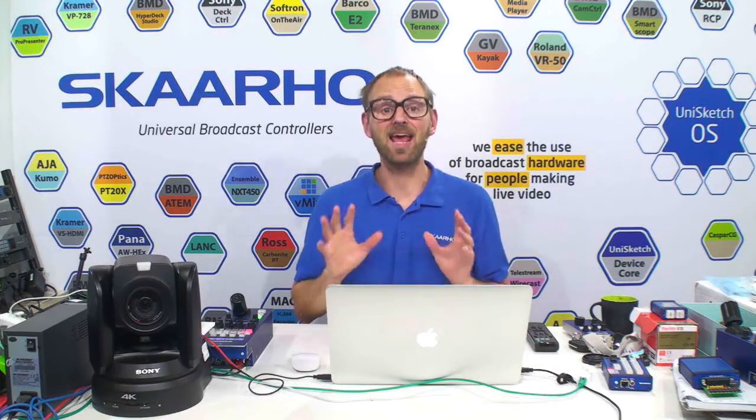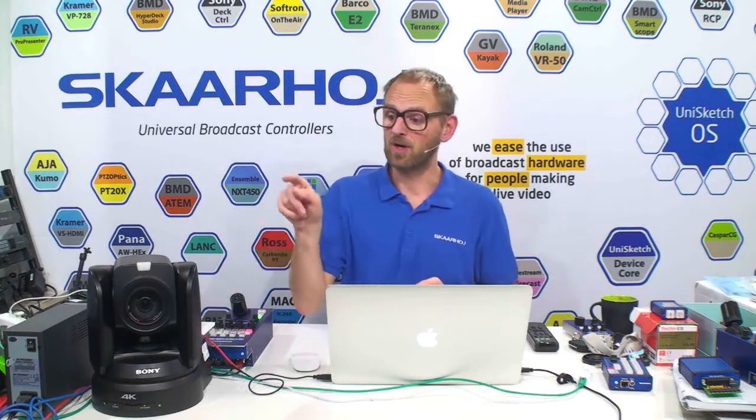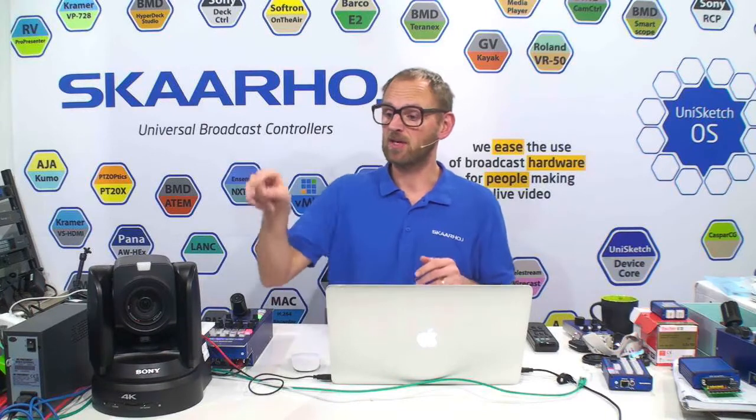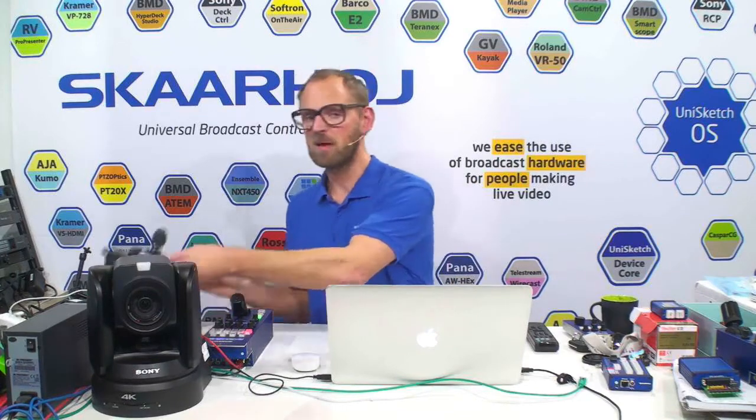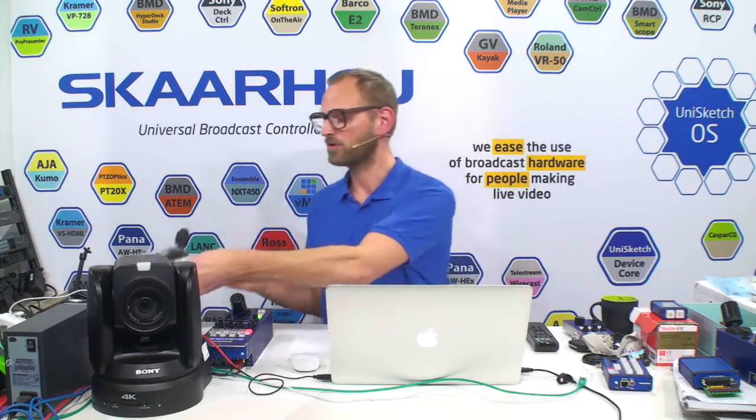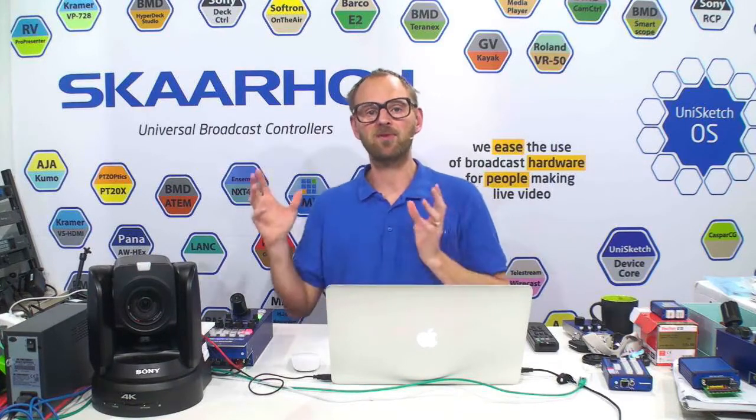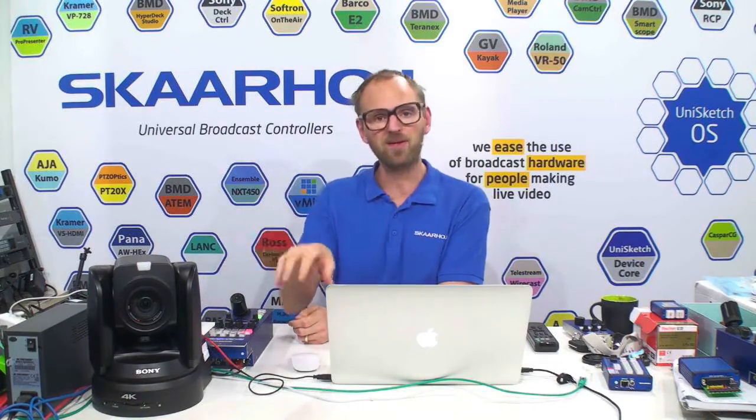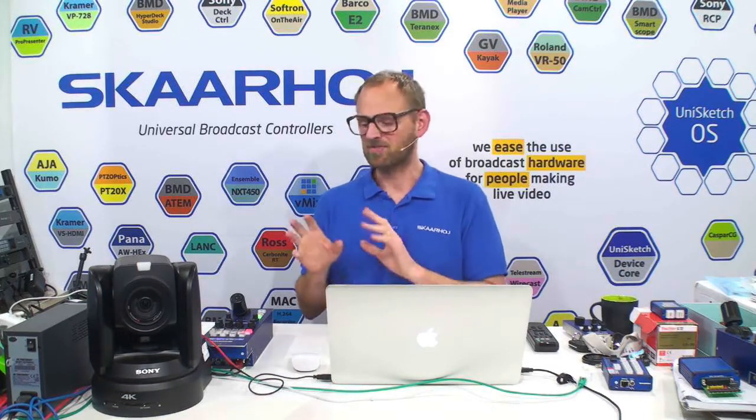The first one is you can get any form factor you like or need. If you need an RCP to control your Sony robotic camera like this BRC X1000 4K robotic camera, then you can have it. We don't just make PTC controllers with a joystick and all that usual stuff. We can also cram the functionality, the control of the camera, down into an RCP form factor device, and that's what we'll look at in this video because it's so unique.